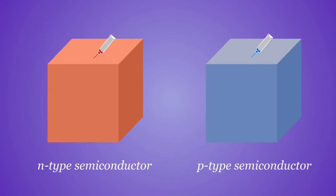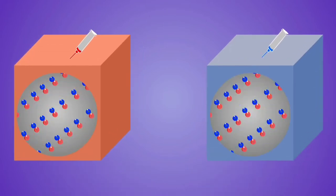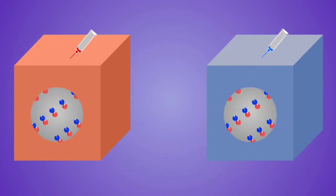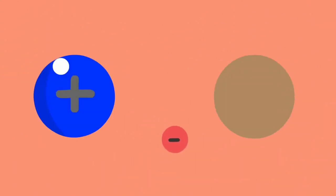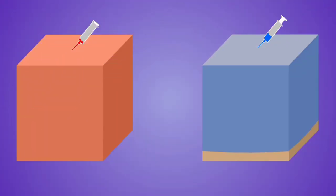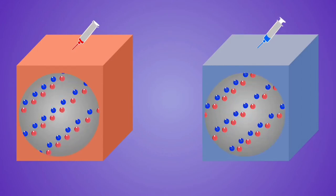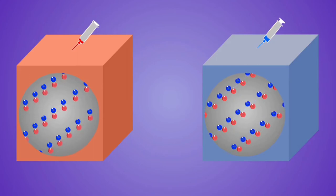It is critical to remember that the resulting semiconductors are not charged — they are electrically neutral. The donors, having donated electrons to the N-type semiconductor, are now positive. Similarly, the acceptors have accepted electrons from the P-type semiconductor and are now negative. Therefore, the semiconductors contain the same number of charges; however, they are named so because of the type of charge that is free to move and carry the current in them.